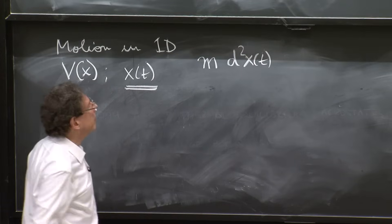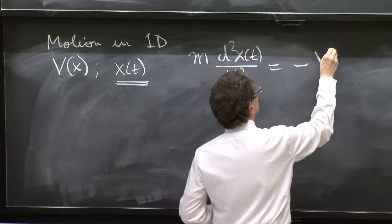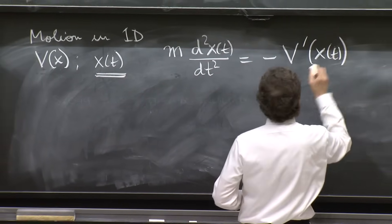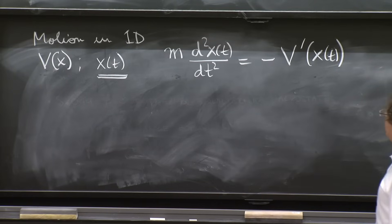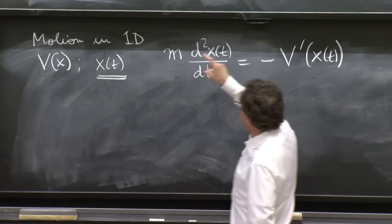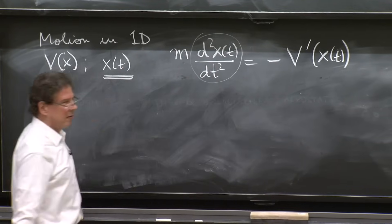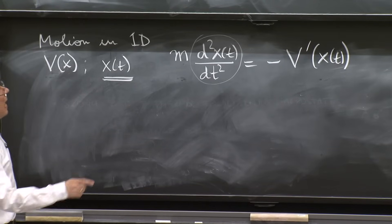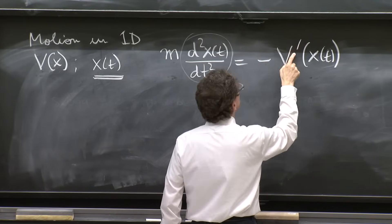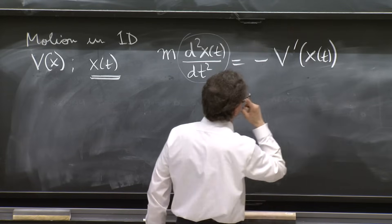The dynamical variable. And the equation of motion is, so let me explain this. This is force equal mass times acceleration. This is the second derivative of the position. And the force is minus the derivative of the potential evaluated at the position.